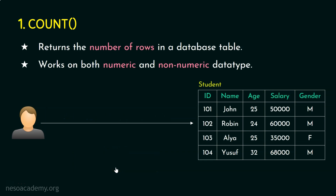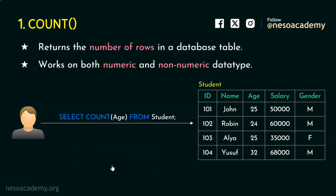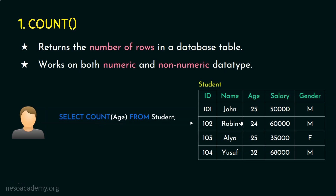Let's see a variation of the COUNT function. Assume the user is providing: SELECT COUNT(age) FROM student. The user wants to count how many values are there in the age column. We can clearly notice there are 1, 2, 3, and 4 values — so the output is 4. But the user's intention is to know how many unique values are there in the age column. Let's see — 25 is repeated twice. So, how many unique values are there? 25, 24, and 32 — only 3 unique values.